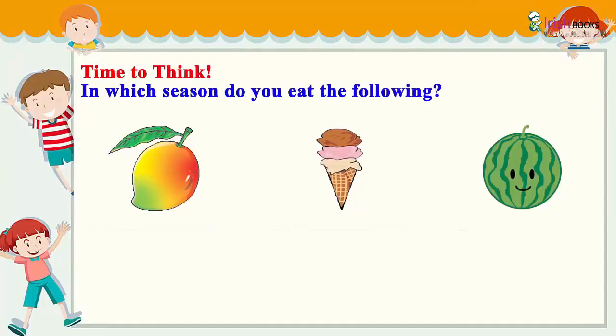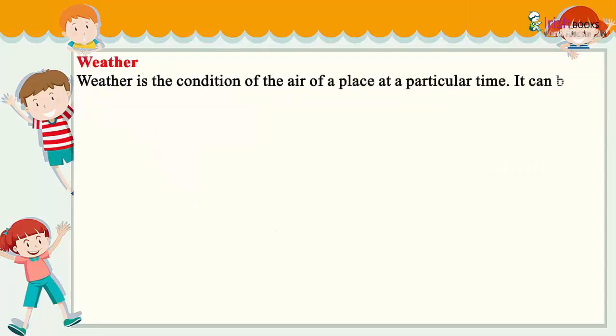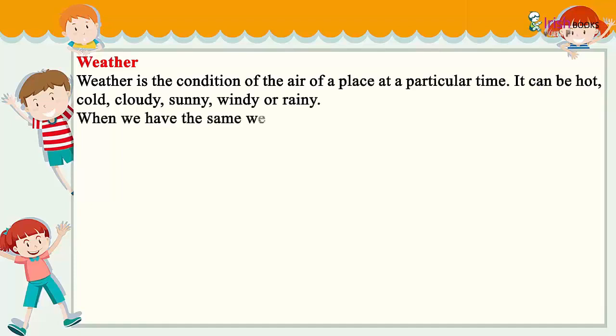Weather is the condition of the air of a place at a particular time. It can be hot, cold, cloudy, sunny, windy, or rainy.